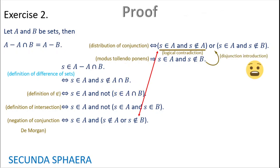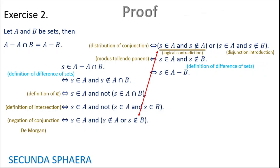Now we can go back because we want an equivalence, and just by disjunction introduction we can always add terms in a disjunction. This gives us the implication back, so this was an equivalence. We have an argument connected by equivalences, which would prove an equality. Before that we have the definition of difference of sets, so s is in A without B.